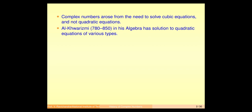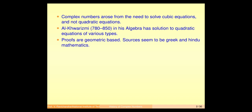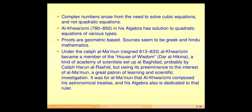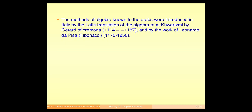Some more history: algebra went from India to Arabian countries. Al-Khwarizmi wrote a book on algebra — this story comes from Greek and Hindu mathematics. He was a member of the House of Wisdom. His book was later translated into other languages, and Fibonacci also used it.